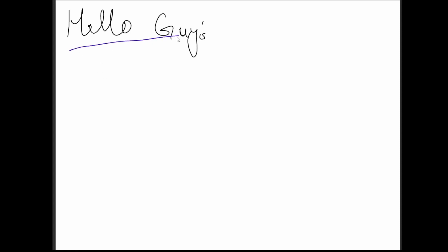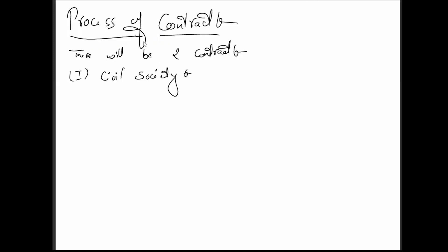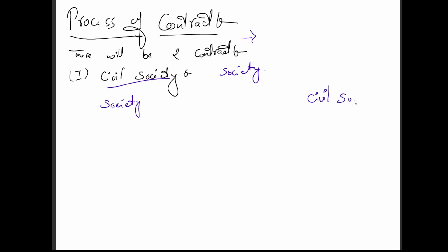Hello guys, I hope you all are doing good. Today we are going to interpret Locke's process of contract. John Locke says that there will be two contracts to form a single contract. The first contract will be of civil society. In a state of nature, man was living in society, so what is the difference between society and civil society? Society is natural — in this you don't have to have any contract, it is informal.